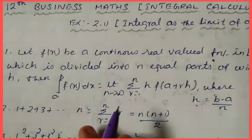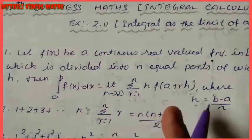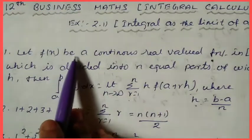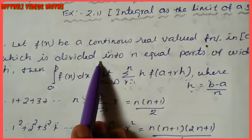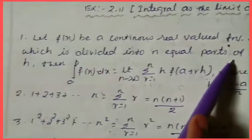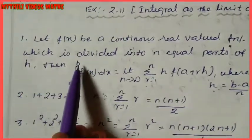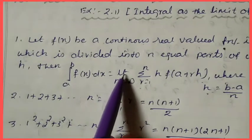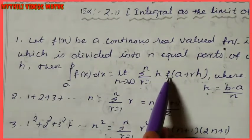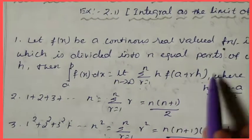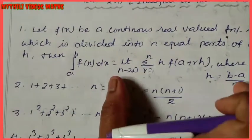So in this, when we apply the formulas for x, it will be a little easy. Let f of x be a continuous real-valued function in [a, b], which is divided into n equal parts of width h. Then the integral from a to b of f(x) dx equals limit n tends to infinity, summation r equal to 1 to n, h times f(a + rh). Here h is given by the formula b minus a divided by n. Based on this formula, we solve the sums.